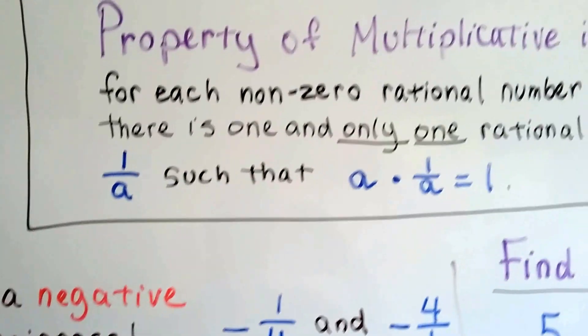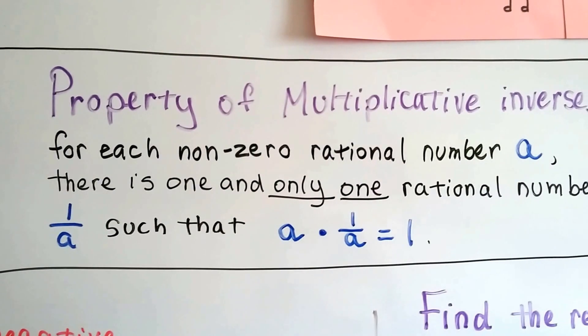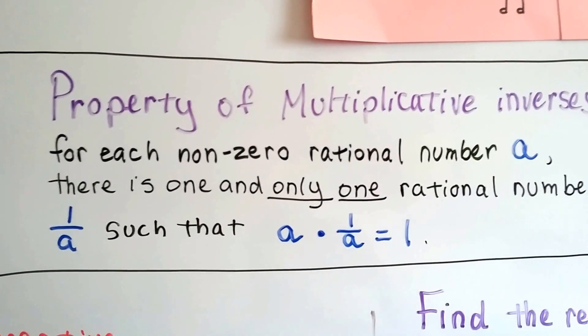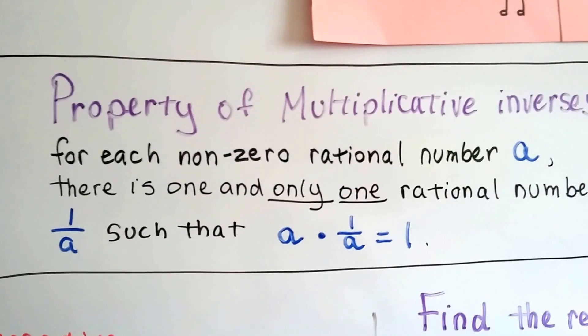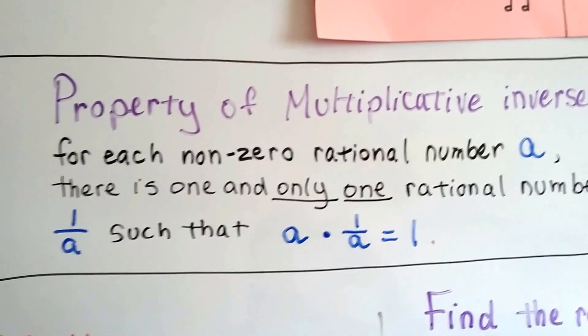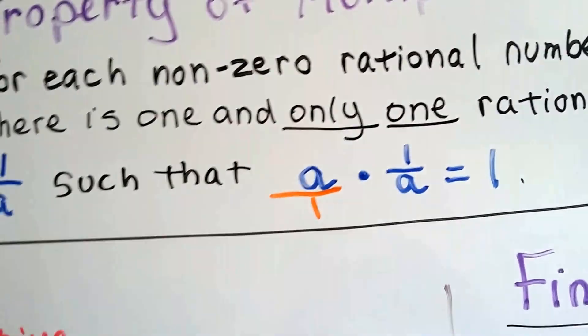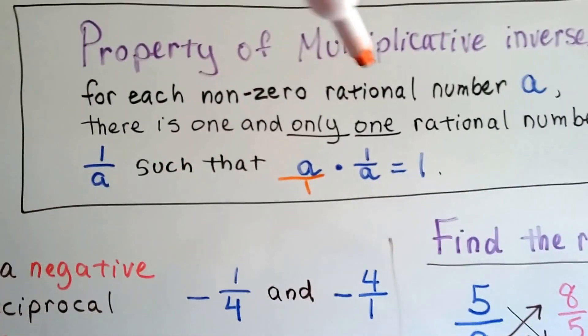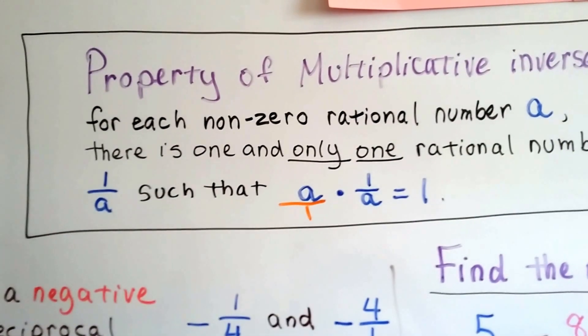So here's the formal property. The property of multiplicative inverses: for each non-zero rational number a, there's one and only one rational number, 1 over a, such that a times 1 over a equals 1. Because we can write this over a 1, and then we would get 1a over 1a. And the numerator and denominator are the same, so it equals 1.